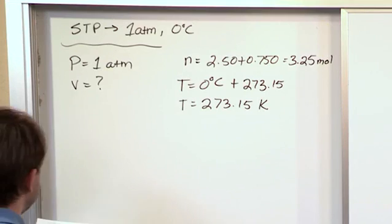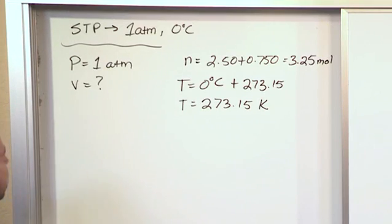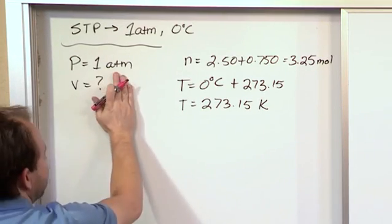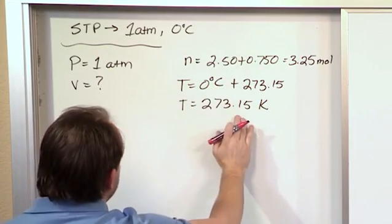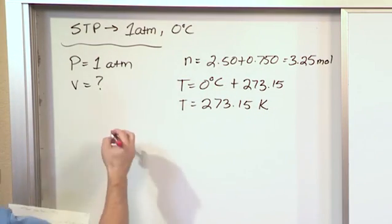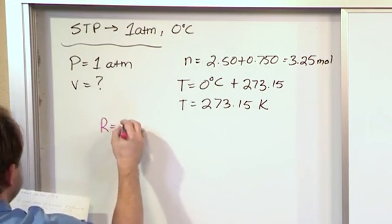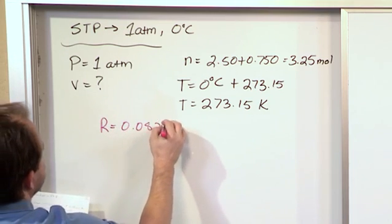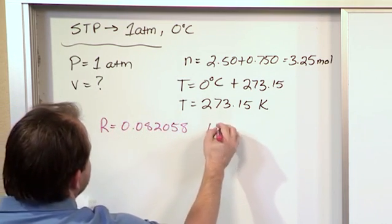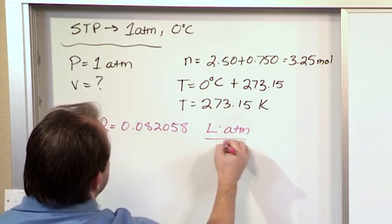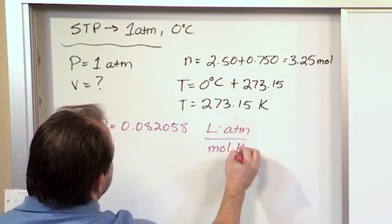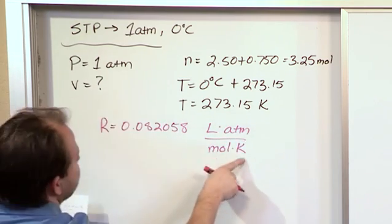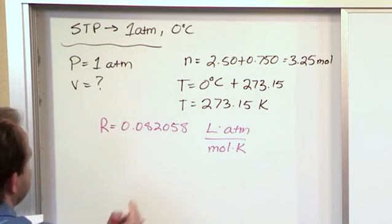And so the next question is, what value of the universal gas constant should we use? Well, we're using atmospheres, moles, and Kelvin. So you want to use the value of R that's 0.082058 because that's liters, atmospheres, moles, and Kelvin. So since we're using atmospheres, moles, and Kelvin here, when we calculate the volume, we're going to get the answer in liters.